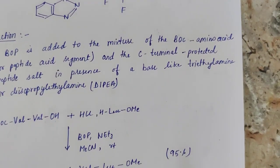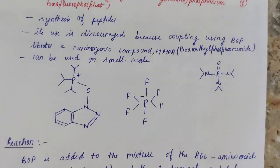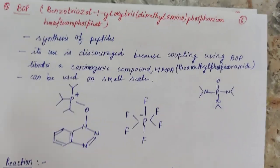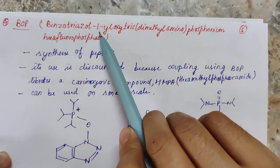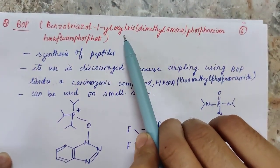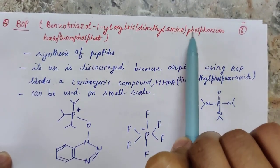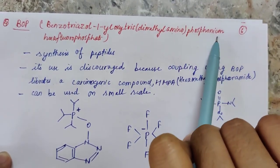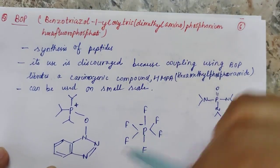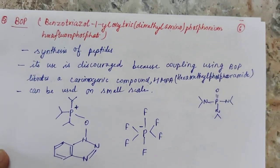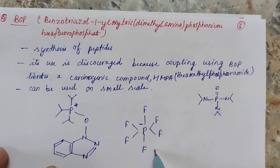The last and fourth reagent is BOP: benzotriazol-1-yloxytris(dimethylamino)phosphonium hexafluorophosphate. It exists as a salt with two moieties — the hexafluorophosphate group and the cationic phosphonium part.